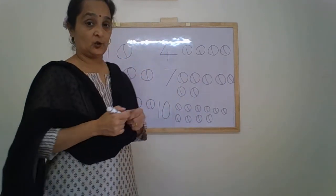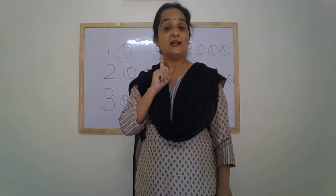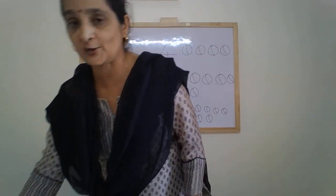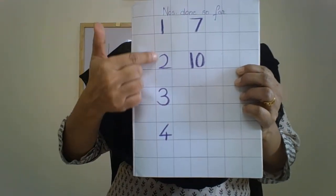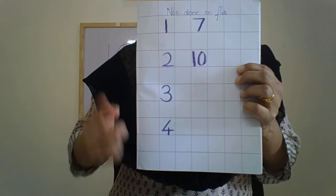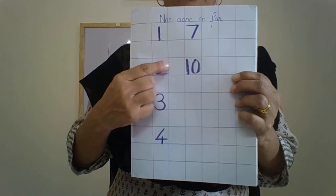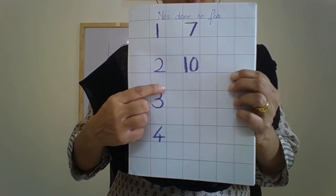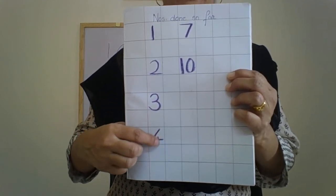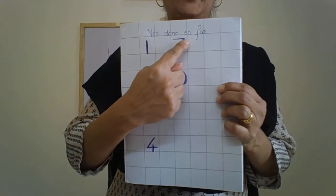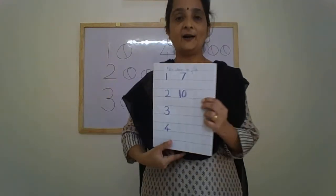Alright children, so revise these numbers every day. See whether you can write them and also practice in your notebook. Numbers are written vertically down, one after the other. Standing line — 1. Front curve, sleeping line — number 2. Front curve, another front curve — number 3. Slanting line, sleeping line, standing line — number 4. Sleeping line, slanting line — number 7. And 1, 0 — number 10.